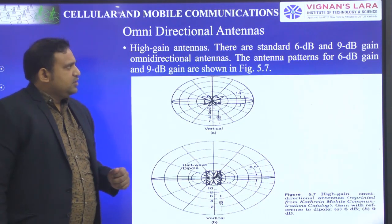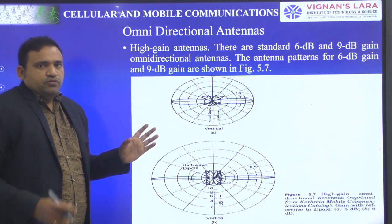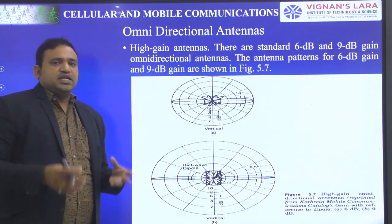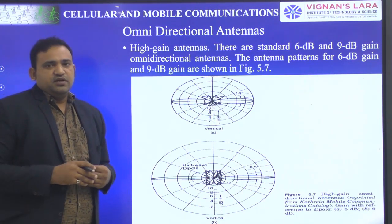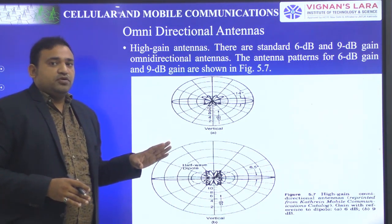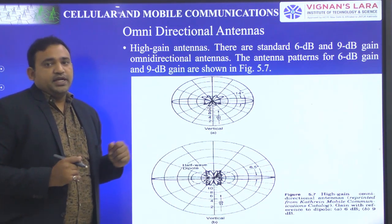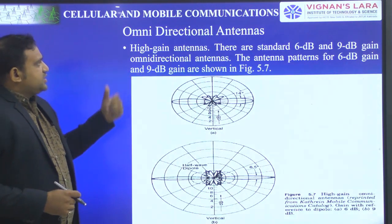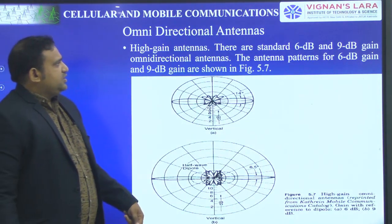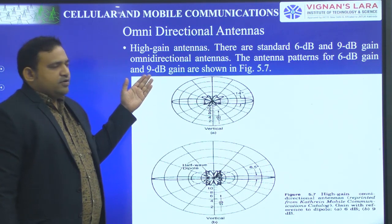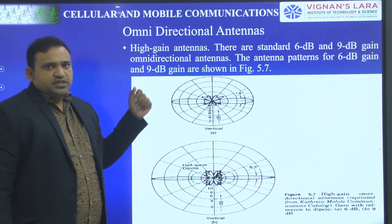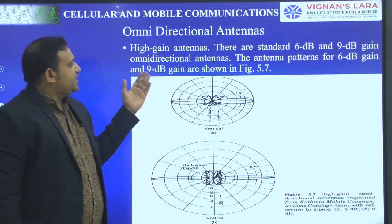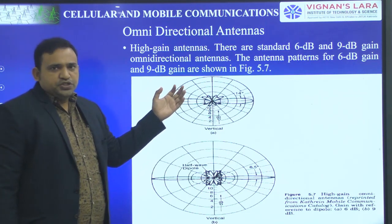Omnidirectional Antennas. We have already studied about what an Omnidirectional Antenna is and what a directional antenna is. Here we are discussing about those antenna patterns. Omnidirectional Antennas are the high gain antennas where the 6 dB and 9 dB gain Omnidirectional Antennas are used. The antenna patterns for the 6 dB and 9 dB gain are as shown in the figure.